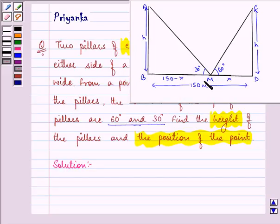Now from a point P, the angle of elevation is 60 and 30 respectively. We need to find out the height of these pillars and the position of this point. So here let this distance MD be equal to X. Therefore the distance of BM will be 150 minus X.